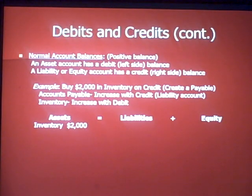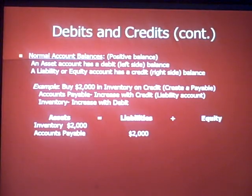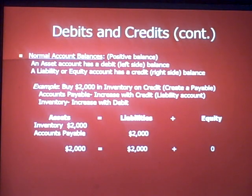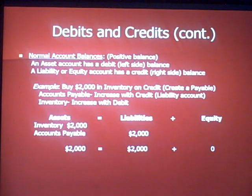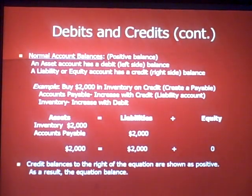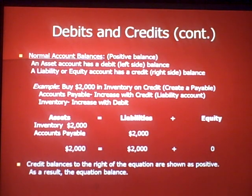Here's another example: we buy two thousand dollars in inventory on credit, meaning we create a payable. Accounts payable, a liability account, increases with a credit; inventory increases with a debit. Under assets we have inventory with a normal debit balance; under liabilities we have accounts payable with a normal credit balance. Once the credit moves to the right-hand side of the equal sign, it's shown as a positive. Assets equals liabilities plus equity — two thousand on both sides — the equation balances.